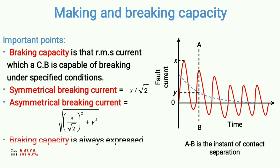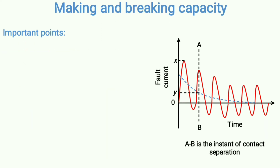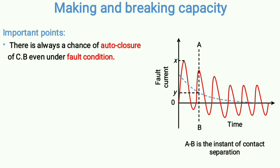Breaking capacity is always expressed in MVA. The breaking current is multiplied with the rated voltage and expressed in terms of MVA. That is the concept of breaking capacity.